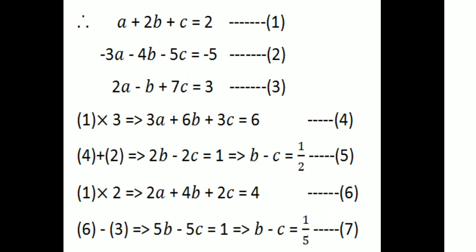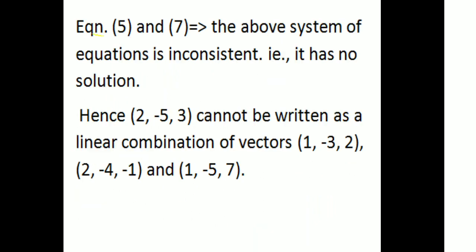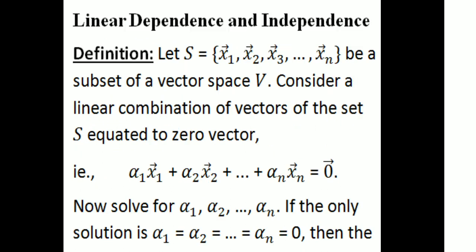Multiply the first equation by 3: 3A + 6B + 3C = 6, then add to the second equation to get 2B - 2C = 1, so B - C = 1/2 (equation 5). Multiply the first equation by 2: 2A + 4B + 2C = 4, then with the third equation we get 5B - 5C = 1, so B - C = 1/5 (equation 7). Equations 5 and 7 are contradictory (1/2 ≠ 1/5), so the system is inconsistent and (2,-5,3) cannot be written as a linear combination.